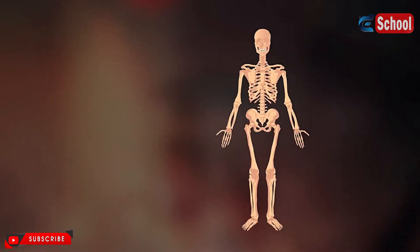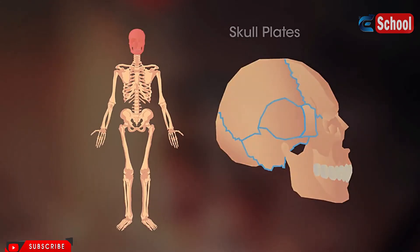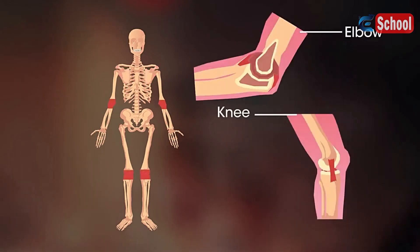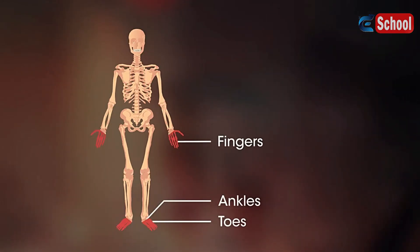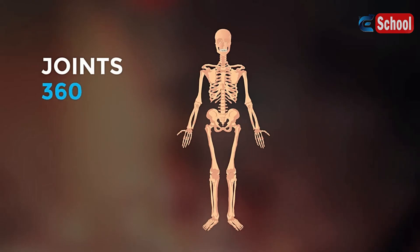Every time bones meet it's a joint. So between the plates of the skull, our very versatile shoulders, knees and elbows, ankles, fingers and toes. Joints are everywhere. In fact there are about 360 joints in the human body.